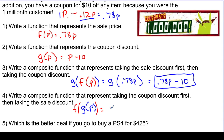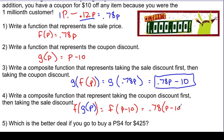Since g of p equals p minus 10, we replace it and go to the f function: f of p equals 0.78p, so we plug in the expression p minus 10. That gives us 0.78 times (p minus 10). Distributing, this becomes 0.78p minus 7.8. So when the coupon is applied first and the percentage second, we subtract $7.80 instead of $10.